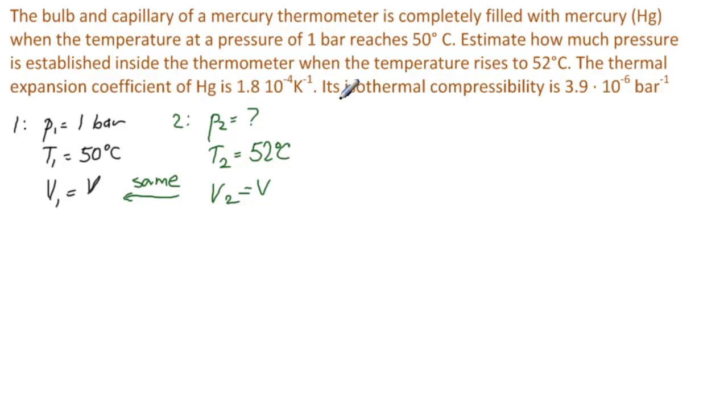Now, the key to doing this problem is to know what these are. The thermal expansion coefficient, usually denoted by alpha, here we have that it's 1.8 times 10 to the minus 4 times 1 over Kelvin.